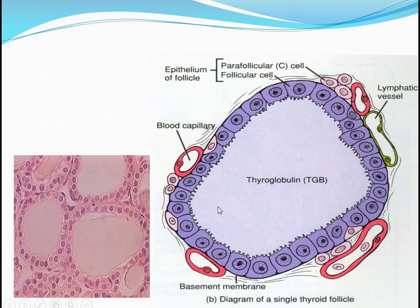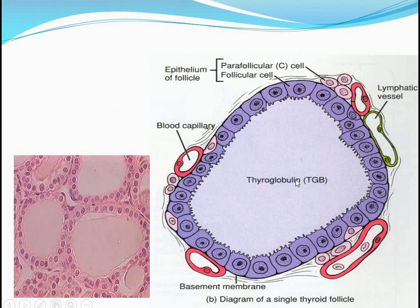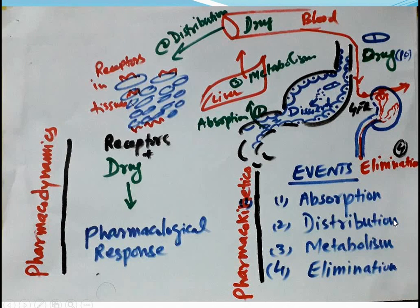This is how a thyroid follicle looks under the microscope. When enlarged, you can see the epithelial surroundings, the blood capillary, parafollicular C cells, and follicular cells. There are lymphatic vessels and blood vessels nearby. It is evident that blood supply is very closely attached to these cells. Diagrammatically, this shows how iodine reaches here and how T3 and T4 are synthesized inside the follicles and attached with thyroglobulin, which I will summarize in the next slides.